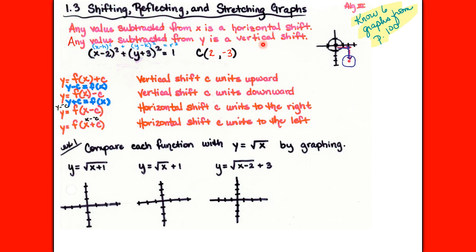Over on the bottom of page 101, they break that down further. For vertical shifts: if we have y = f(x) + c, you could subtract that c over to the other side to get y − c = f(x). A positive c is being subtracted from y, so that's a vertical shift of a positive c. Since positive is up, that means vertically shift c units up.